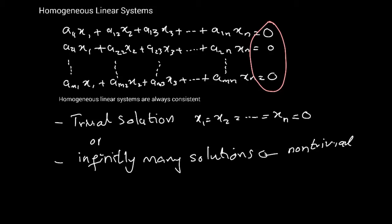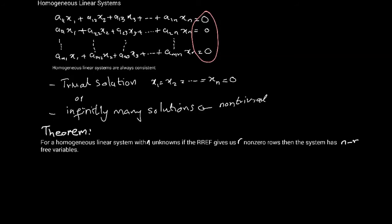The couple of other properties: this theorem states that for a homogeneous linear system with n unknowns, if the RREF, which is the reduced row echelon form, gives us r non-zero rows, then the system has n minus r free variables.